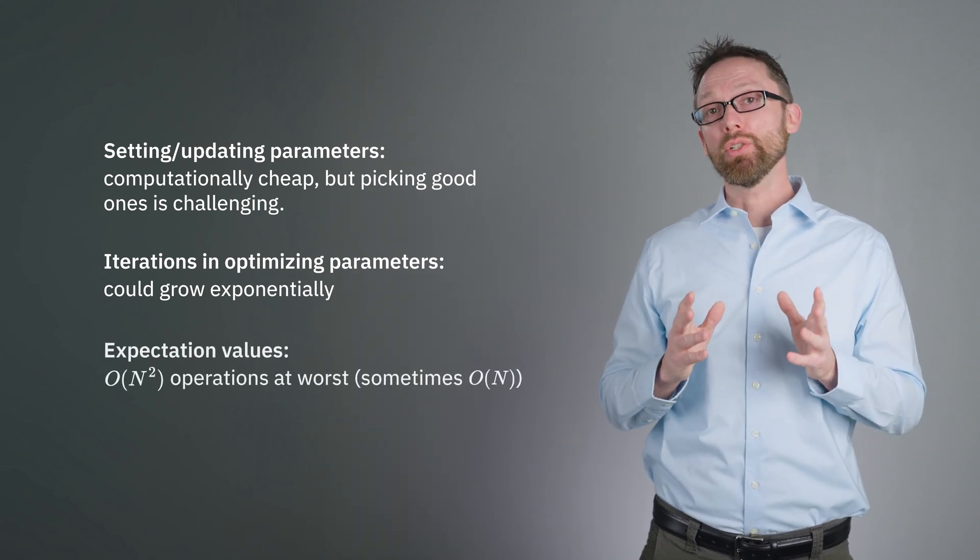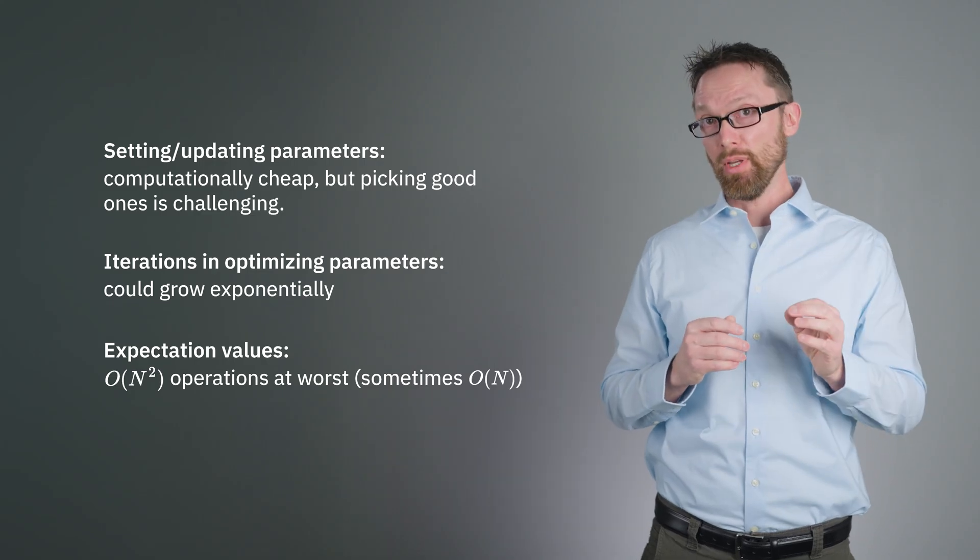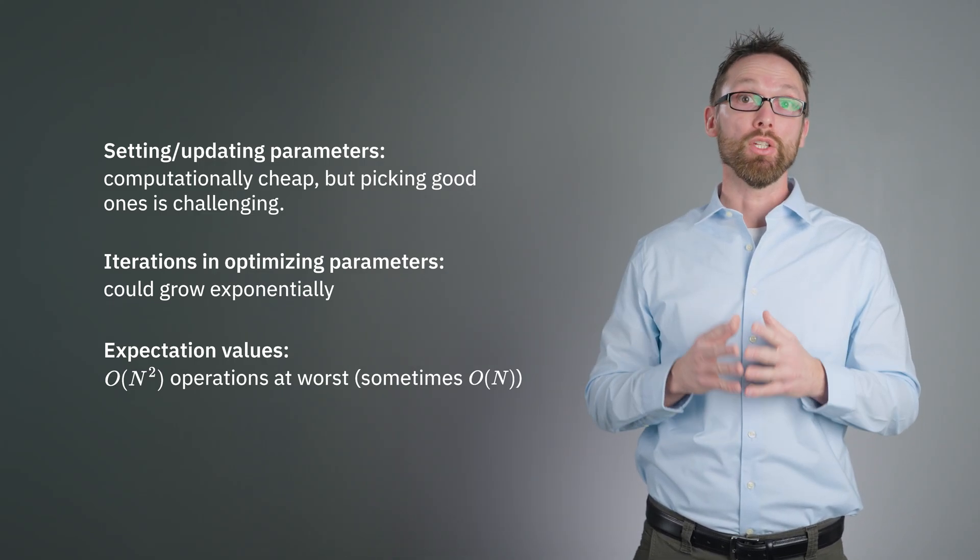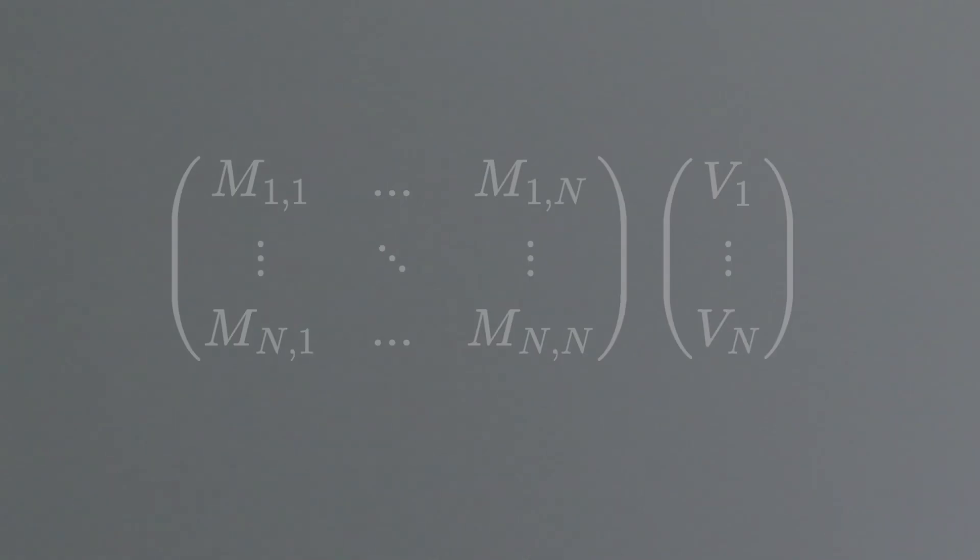The most computationally expensive single step is almost certainly the expectation value of your matrix, using a given state. The n-by-n matrix must act on the n-element vector, which corresponds to order n² multiplication operations in the worst case. This must be done at each iteration of parameters. For extremely large matrices, this has high computational cost. Now imagine relegating this portion of the calculation to a quantum computer.